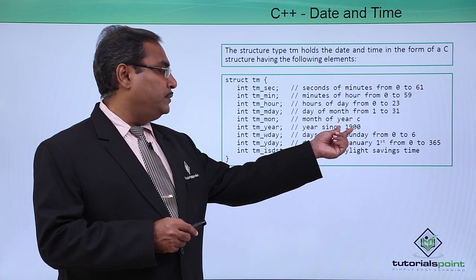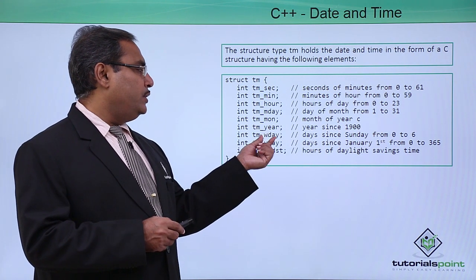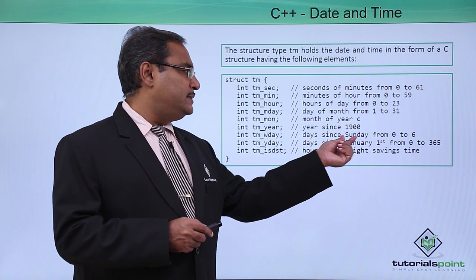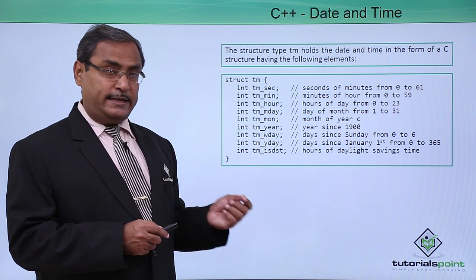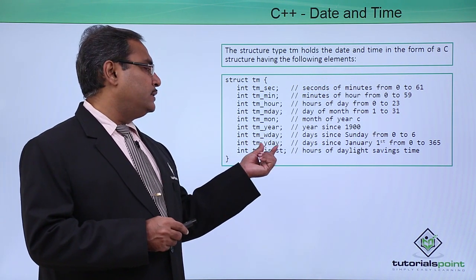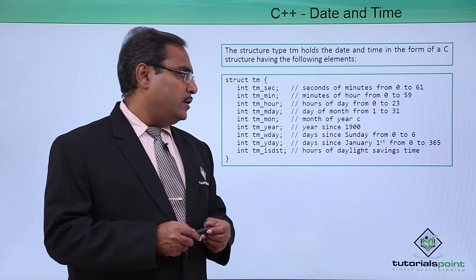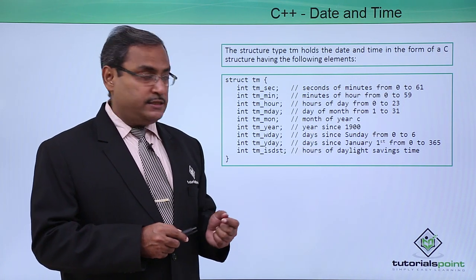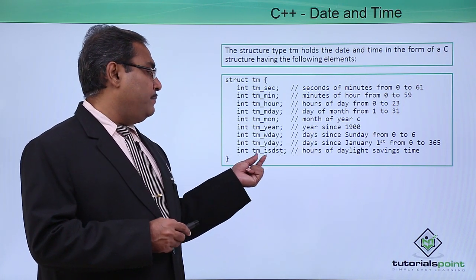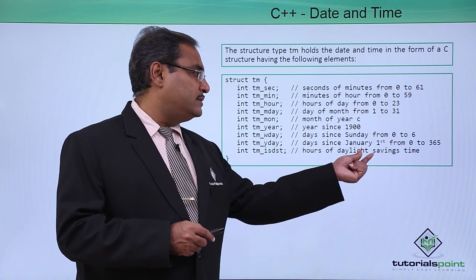tm_wday, days since Sunday, so it will be ranging from 0 to 6 here. tm_yday, days since January 1st, that is it will be ranging from 0 to 365. And then tm_isdst, that is hours of daylight saving time.